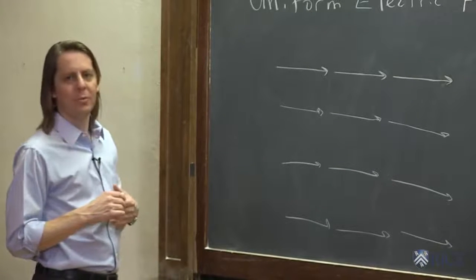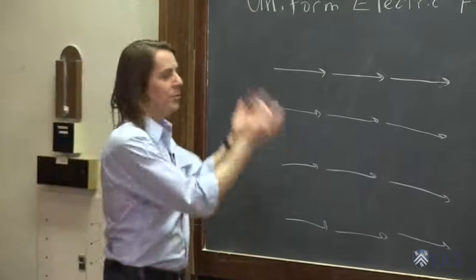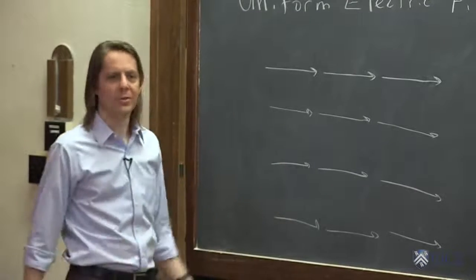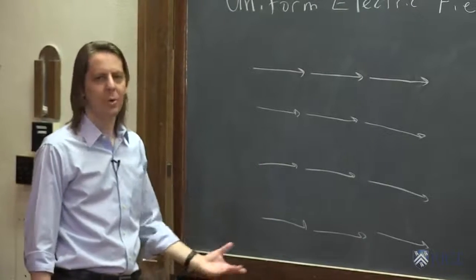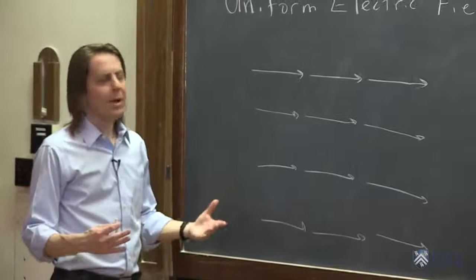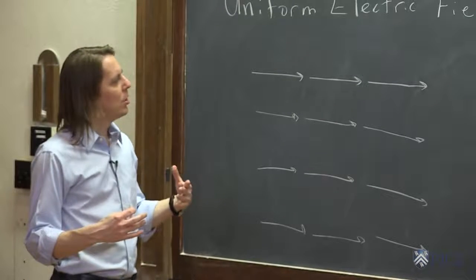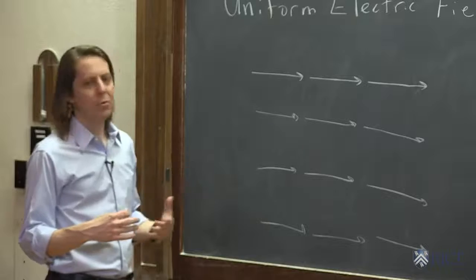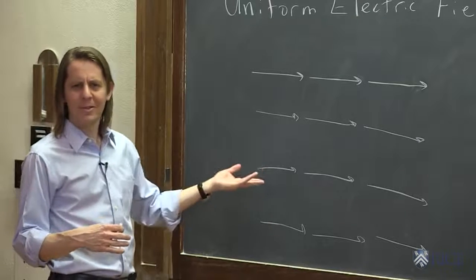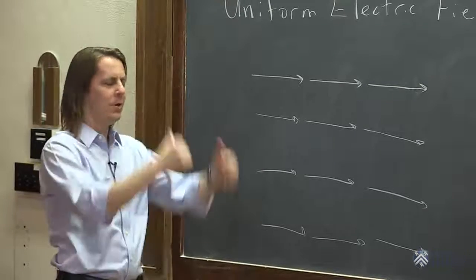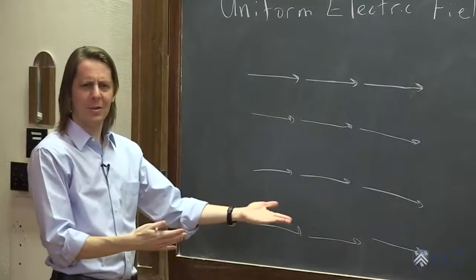Now in some physics problems, you might just be told you have a uniform field. Do the problem. Answer the question. How fast does the particle move? What's the force? But you might also have cases where the problem is about how we made the uniform field because you might wonder how we make this. You think you have a point charge. The field's all spherically symmetric, shooting out all directions. How would you make this?